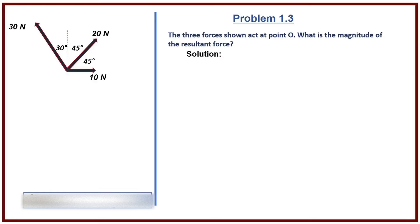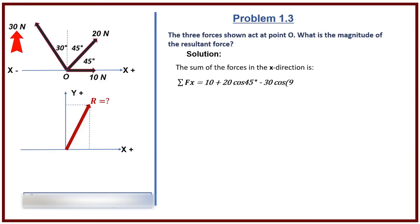Solution. The sum of the forces in the x direction is: sum Fx equals 10 plus 20 times cosine 45 degrees minus 30 times cosine 90 minus 30 degrees. Fx equals 9.14 newtons.